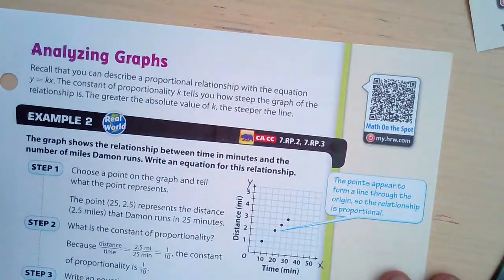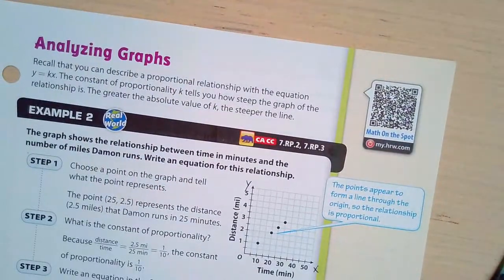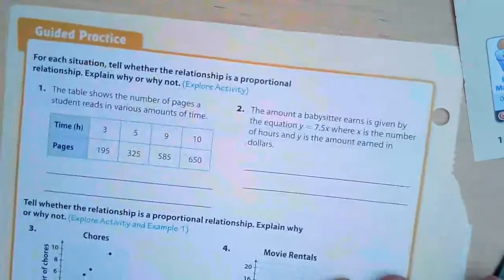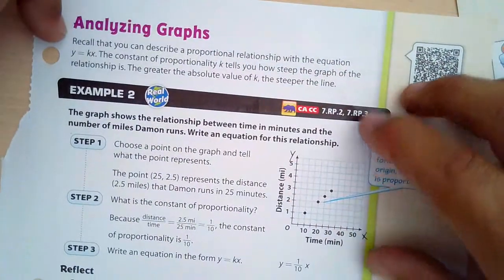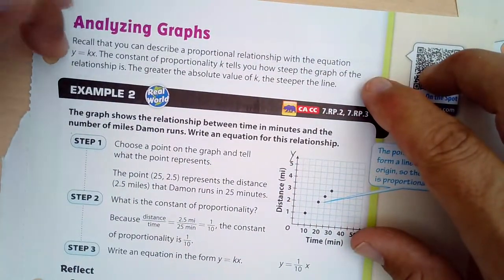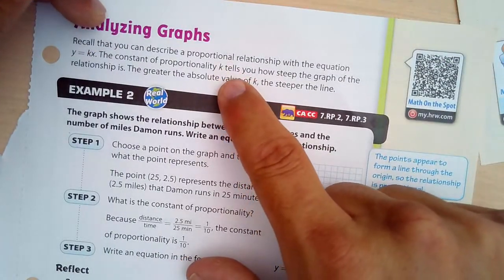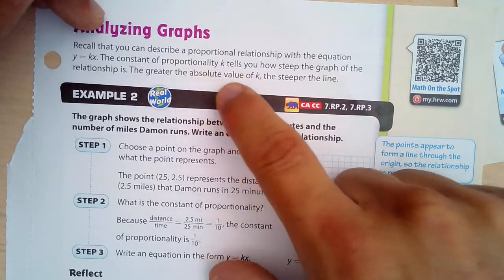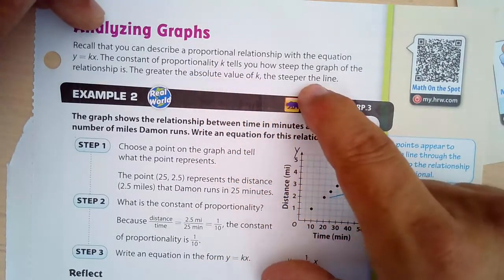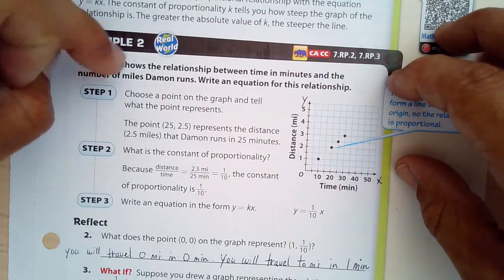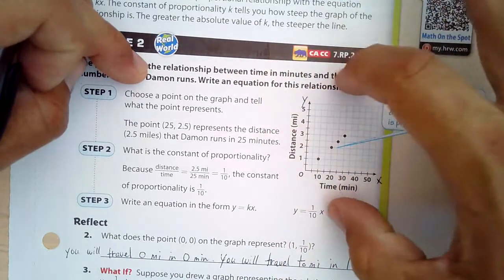Next, we have this on page 131. And we are analyzing graphs. Recall that you can describe a proportional relationship with the graph y equals kx. Constant of proportionality, k, tells you how steep the line is. So the greater the absolute value of k, the steeper the line you got. This graph shows the relationship between time in minutes and number of miles Damon runs. And you're going to write an equation for this relationship.